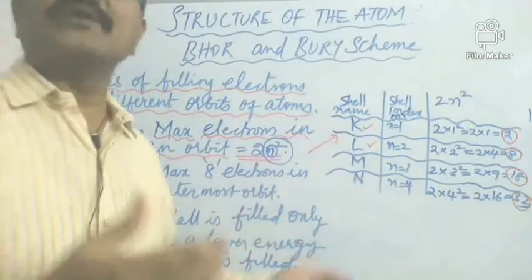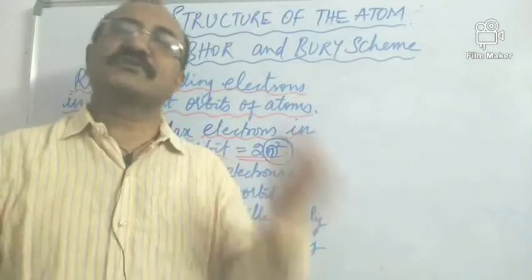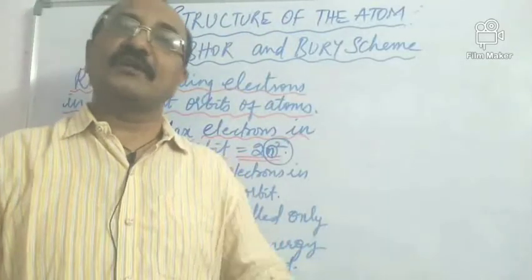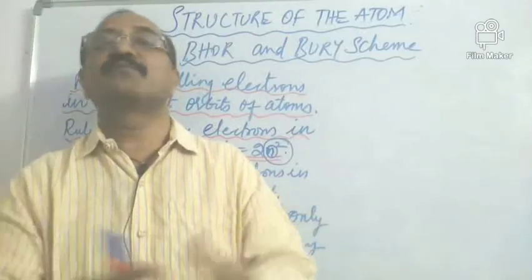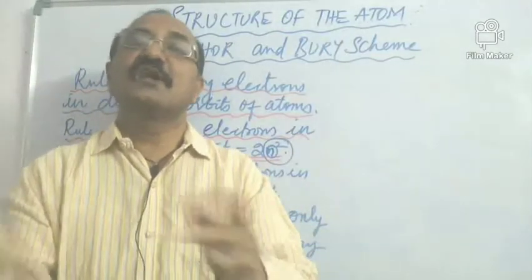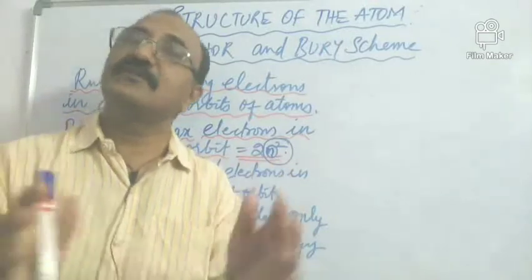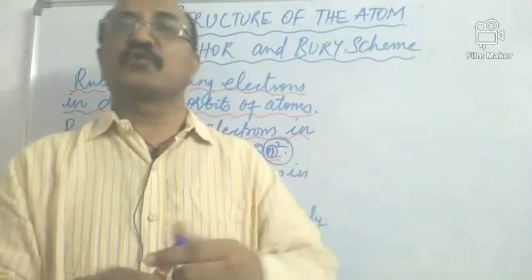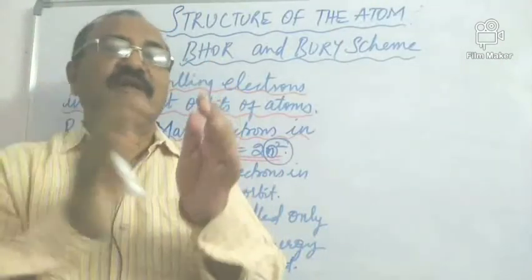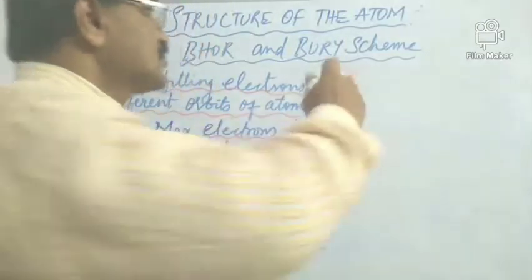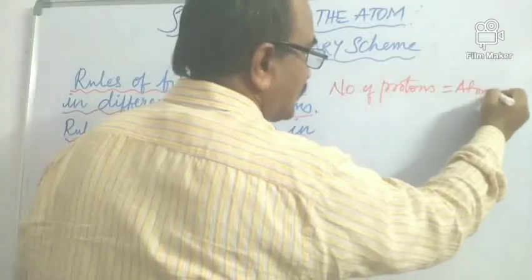Now we will get into the second rule. Before getting into the details of the second rule, I want you to understand one term called the atomic number of an element. Going back to the structure of the atom after Niels Bohr's explanation and the subsequent discovery of neutrons and protons — what are the positively charged particles in the atom? They are protons, and these protons are inside the nucleus of an atom.